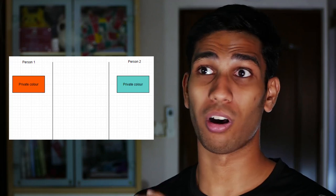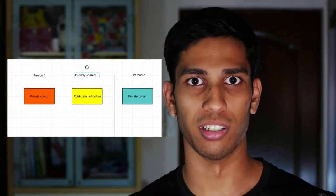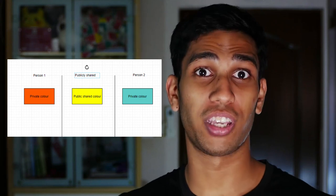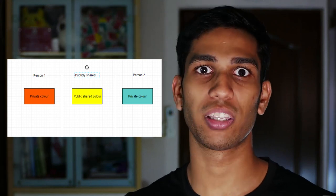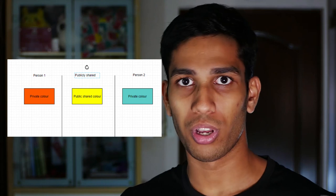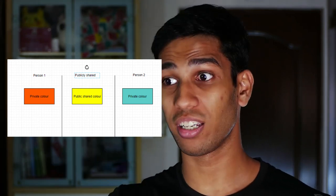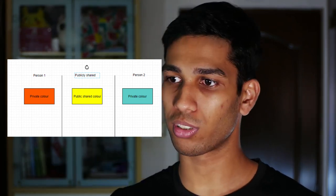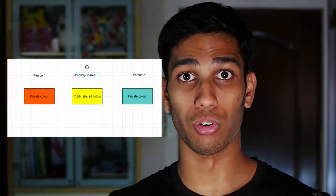The next thing is we're going to select a common color — a shared color. This is a public color and everyone is going to hear it. Imagine I tell the other person: I picked the color yellow. The whole public is going to know. The only way for me to tell the other person is for the whole public to know. So I tell the person I've picked the color yellow.